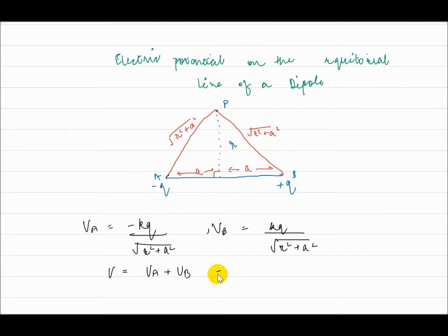which is equal to minus kq under root r square plus a square plus kq upon r square plus a square, which is equal to zero.